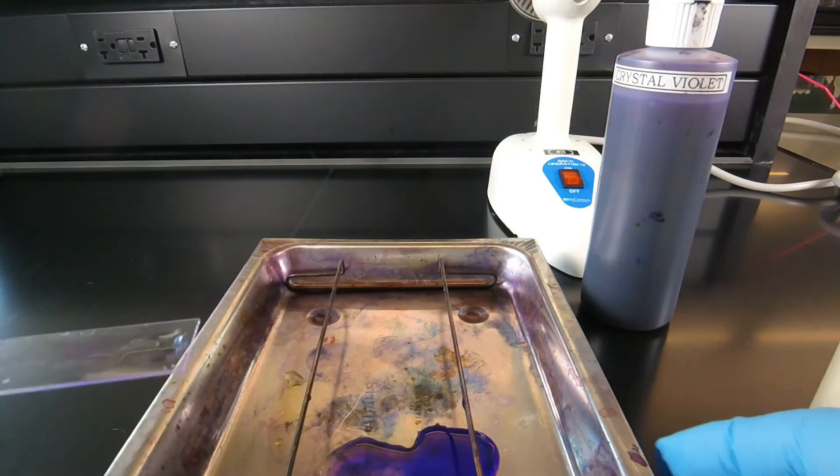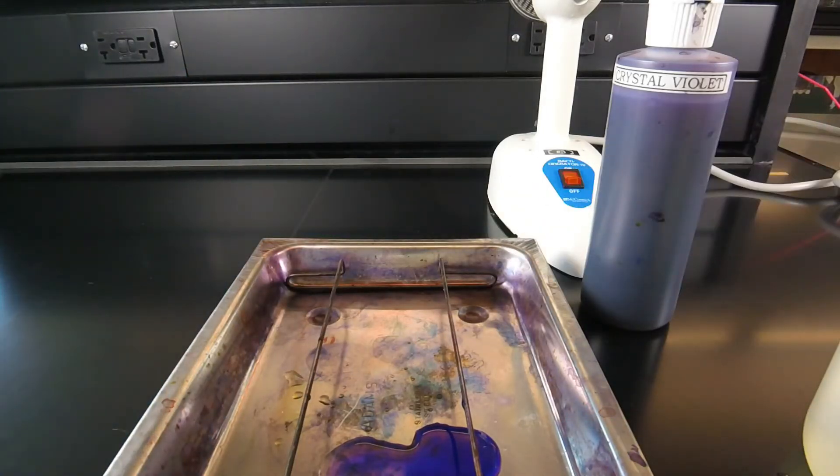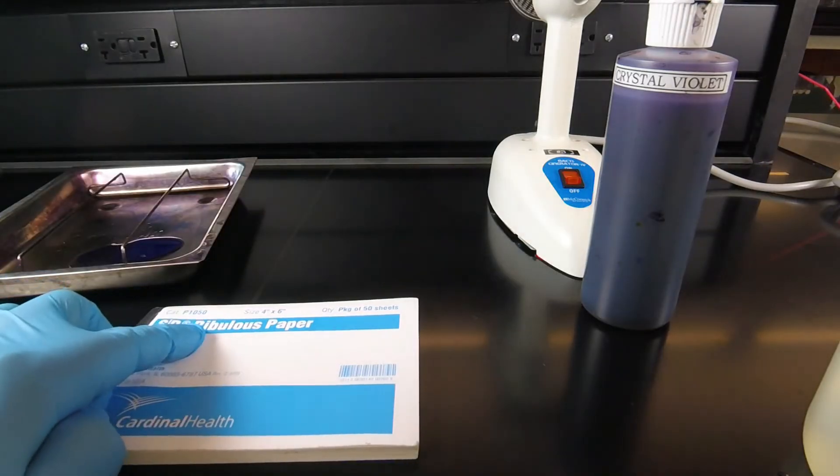Now once we've washed off the excess dye, we're going to blot the slide dry. To blot the slide dry, we use books of what's called bibulous paper or blotting paper.